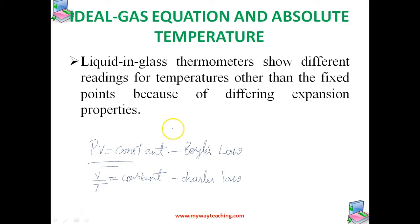Low density gases obey these laws, which may be combined into a single relationship. Since PV = constant and V/T = constant for a given quantity of gas, it follows that PV/T is also equal to a constant.